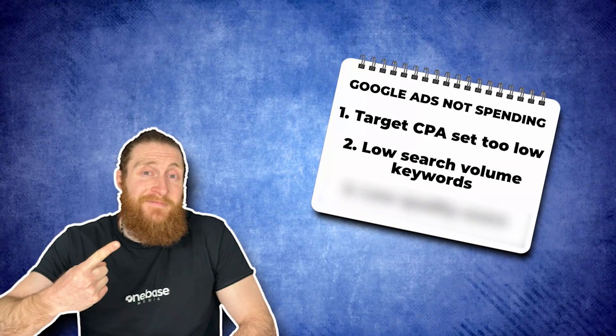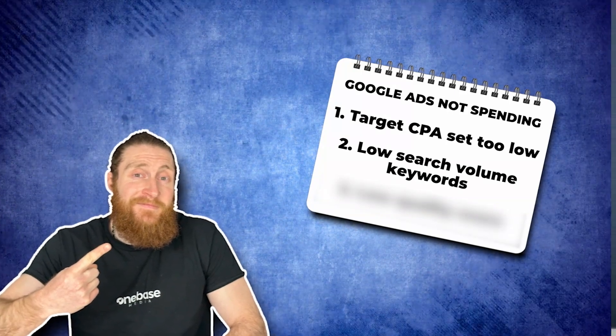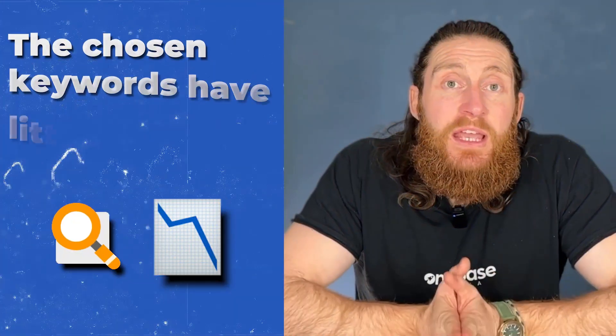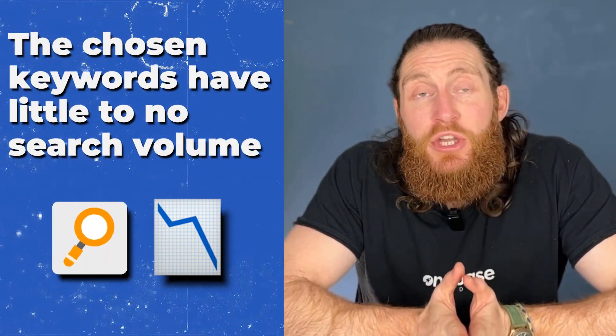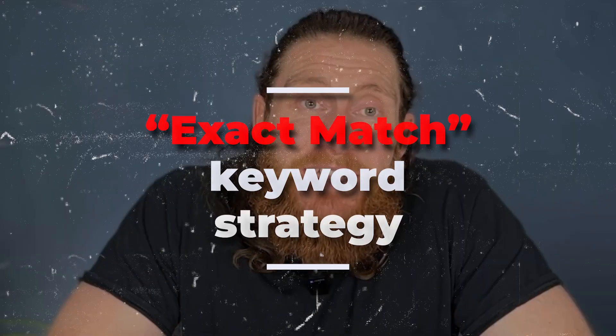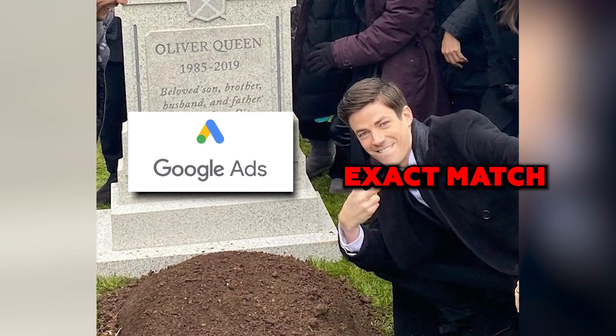We do like using the target CPA bidding strategy, but only after we've collected a lot of data. Problem number two: low search volume keywords. Another common issue we see that causes Google to not spend the budget is when keywords have been chosen with little to no search volume, and worse, when these keywords are put in a campaign using the exact match keyword strategy. This might seem like a good idea because the keywords are exactly what you want to get found for, but it will kill the campaign overall.